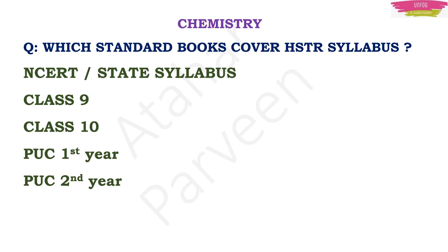If you are a CB method aspirant: for chemistry, you need to go through textbooks from high school, PUC first year, and a few topics from PUC second year. Very few topics from BSc are also there. For biology, you need to study everything in high school and PUC first year. PUC second year portion is very less, but you need to be perfect with 9th and 10th standard.